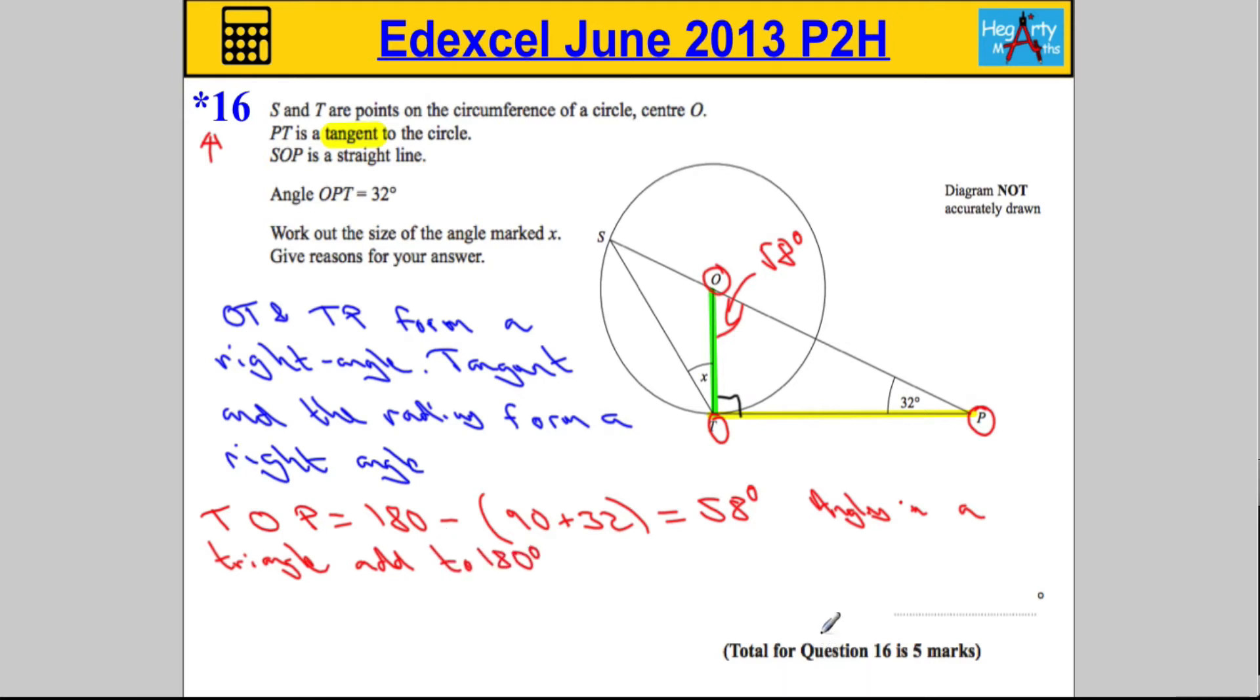So that's okay. There's more information I can fill in the diagram. I can now work out this blue angle here, which I'm going to call the angle SOT. So SOT is going to be found by doing 180 degrees subtract 58.